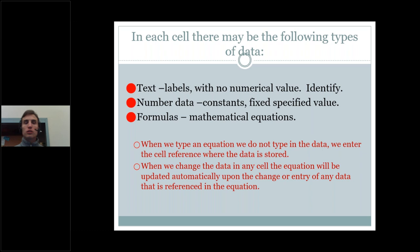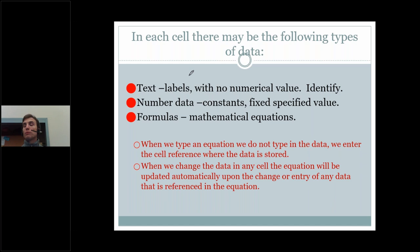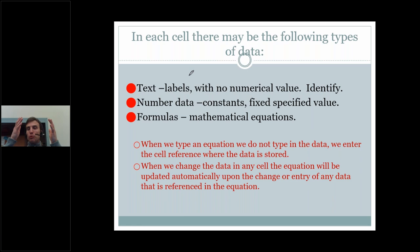Speaking of entering data into cells — what can we put in a cell? We can have text data. Text data often pulls a double duty: it's often a data value in its own right, but it's also identifying other values. In some cases, text data is just a label. For example, if we have a column of employee ID numbers, those might not make sense to someone reading the spreadsheet unless there is a text label at the top that says 'Employee ID Number' — acting as a label identifying the cells underneath so we can make sense of them.